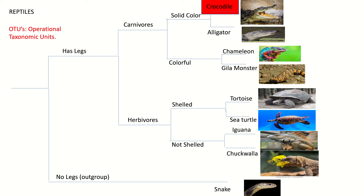The next definition is OTUs, otherwise known as operational taxonomic units. These can be different species or even strains of viruses, but on this tree we will be using the different species of reptiles as our OTUs.